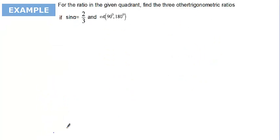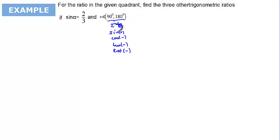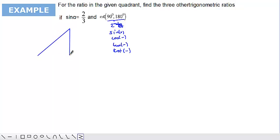For the second question, the angle is in the second quadrant. In the second quadrant, sine is positive and cosine is negative, so tangent and cotangent — since tangent equals sine over cosine and cotangent equals cosine over sine — will be negative. One side of the triangle is 2 and another is 3.